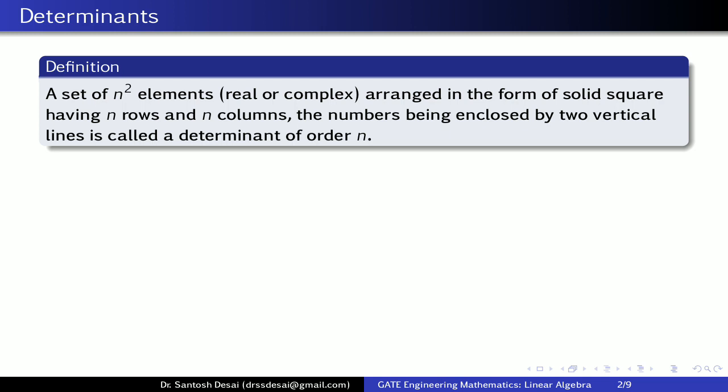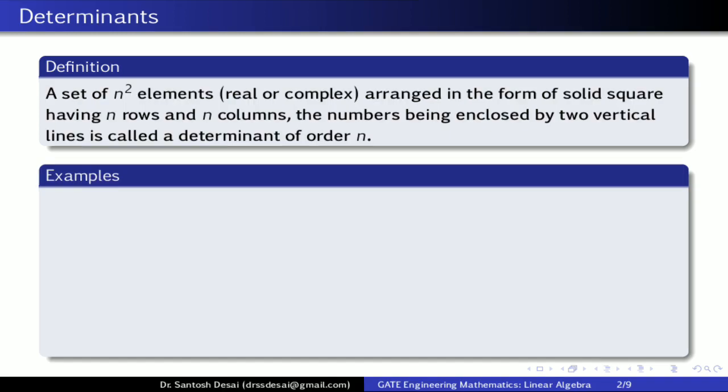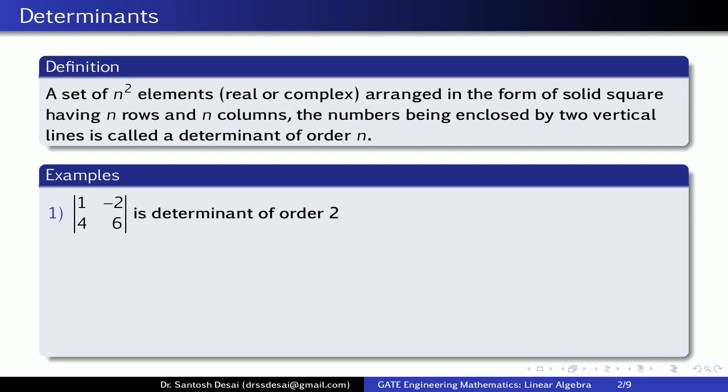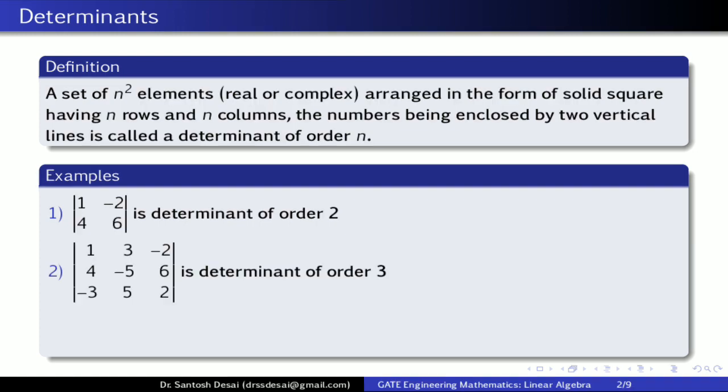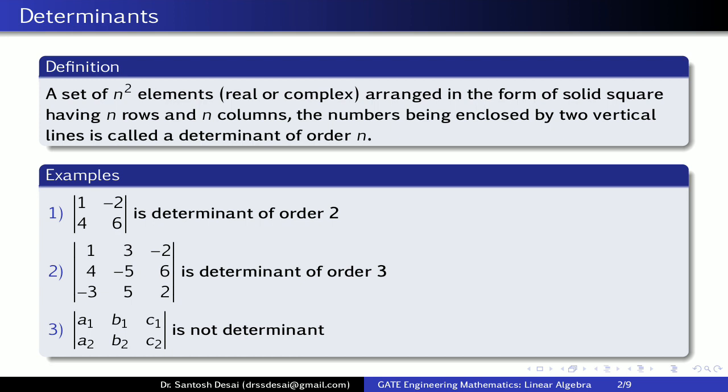We note that in a determinant, the number of rows is always equal to the number of columns. For example, example 1 is a determinant of order 2, example 2 is a determinant of order 3, but example 3 is not a determinant because the number of rows is not equal to the number of columns.